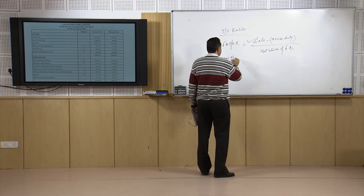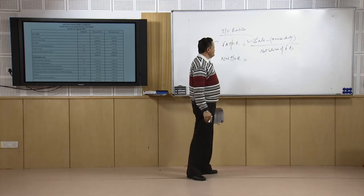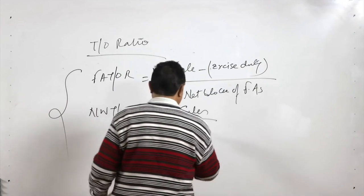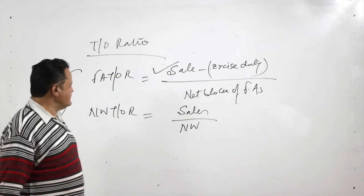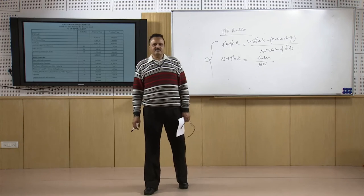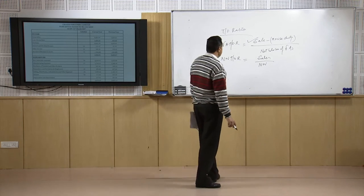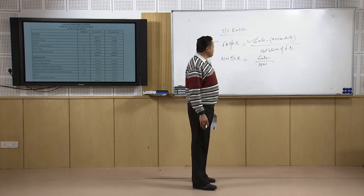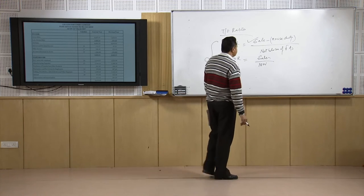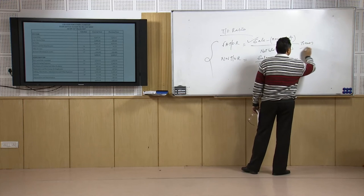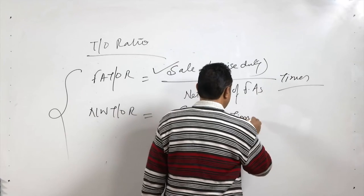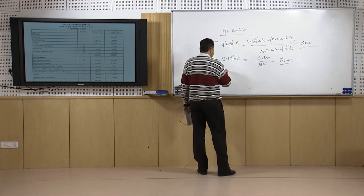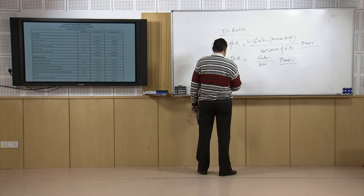The net worth turnover ratio is calculated as net sales (after excise duty) divided by net worth. This tells us how many times the sales are relative to the net worth. This ratio is calculated in times, not percentage. We will calculate both the fixed assets turnover ratio and the net worth turnover ratio using data from Grasim Industries. The debtors turnover ratio and inventory turnover ratio have already been discussed.